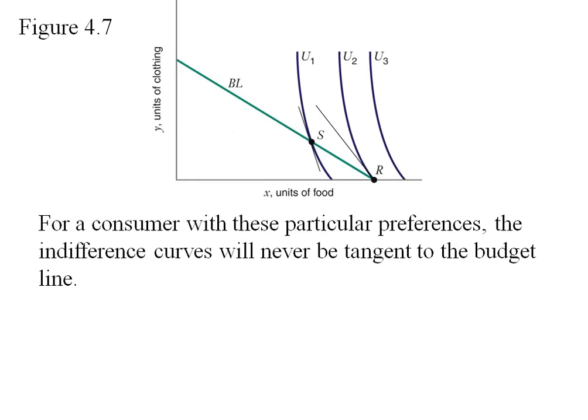So notice that every single one of these indifference curves, U1, U2, and U3, the indifference curve is steeper than the budget line. That means we're not going to have an interior optimum. They're never going to be tangent to one another.